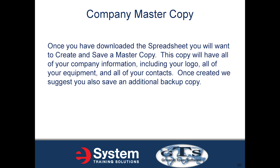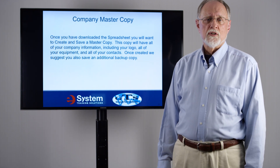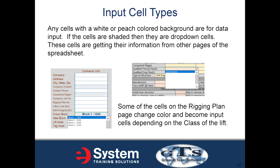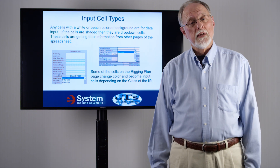Once you have downloaded the spreadsheet, you'll want to create and save a master copy. This copy will have all of your company information including your logo, all of your equipment, and all of your contacts. We also suggest saving an additional backup copy. Any cells with a white or peach colored background are for data input. Shaded cells are drop-down cells getting their information from other pages. Some cells on the rigging plan page change color and become input cells depending on the class of the lift — we'll cover that in the next video.